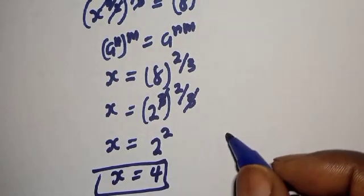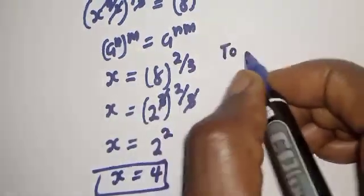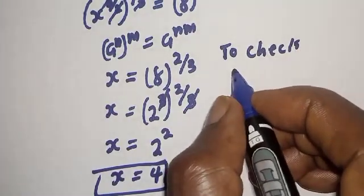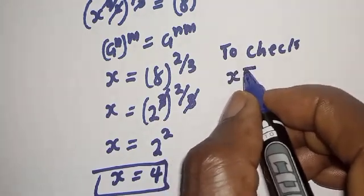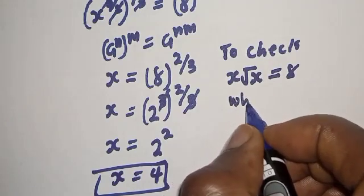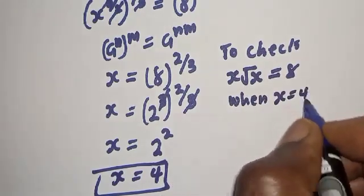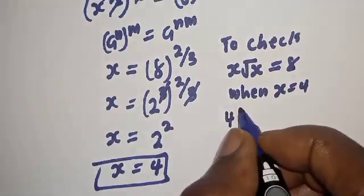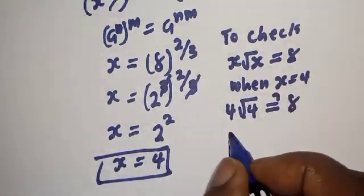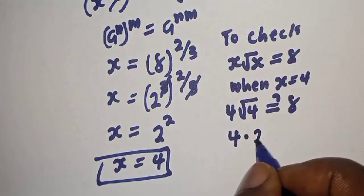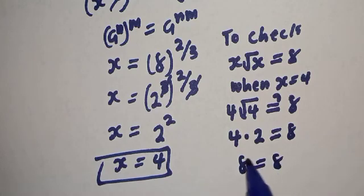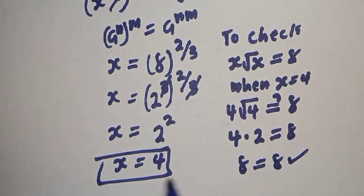Let's check to confirm if our answer is right or wrong. We have the given equation: s times the square root of s is equal to 8. When s is equal to 4, this is 4 times the square root of 4, which must equal 8. 4 multiplied by square root of 4 is equal to 8. Therefore, the left-hand side, 8, is equal to the right-hand side, 8, which satisfies the given equation. So s is equal to 4.